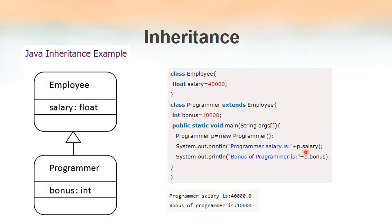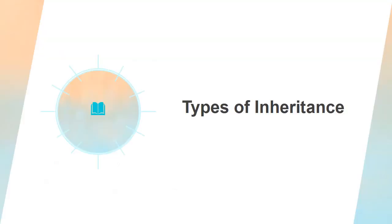When we write p.salary, we access the variable that Programmer got from the parent class Employee, so 40,000 gets printed. p.bonus accesses the variable of class Programmer itself. We can access p.salary using object p because Programmer is the subclass of Employee, so all variables and methods declared as public, default, or protected are available. Both salary and bonus are available to objects of class Programmer. This is also represented in a class diagram where Employee is the parent and Programmer is the subclass.